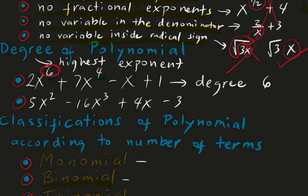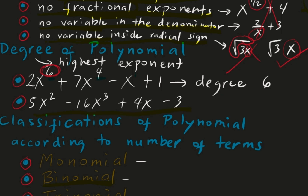For number 2: if you observe 5x squared minus 16x cubed plus 4x minus 3, what is the highest exponent? It is not 2 — the highest exponent is 3, even though it is not first in the expression. Therefore, the degree of the polynomial is degree 3.